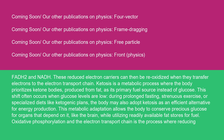Ketosis is a metabolic process where the body prioritizes ketone bodies, produced from fat, as its primary fuel source instead of glucose. This shift often occurs when glucose levels are low — during prolonged fasting, strenuous exercise, or specialized diets like ketogenic plans. The body may also adopt ketosis as an efficient alternative for energy production. This metabolic adaptation allows the body to conserve precious glucose for organs that depend on it, like the brain, while utilizing readily available fat stores for fuel.